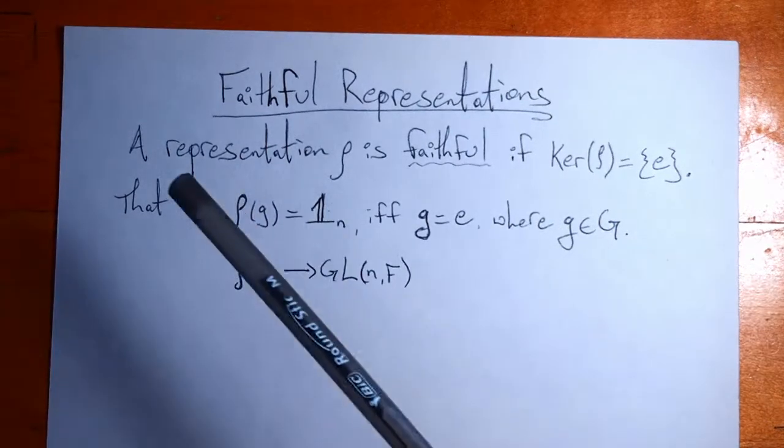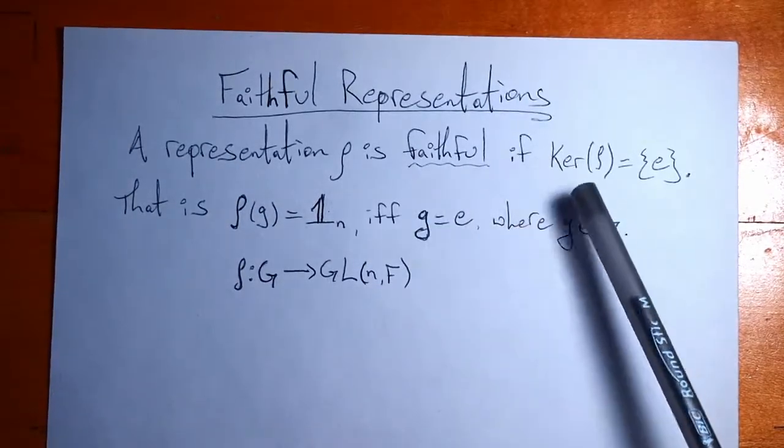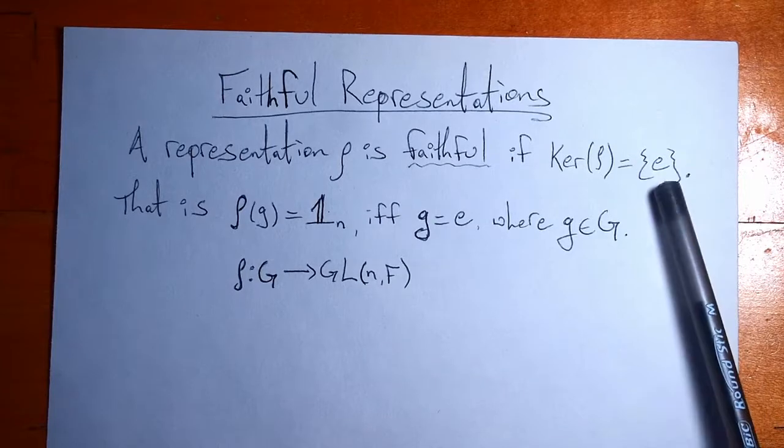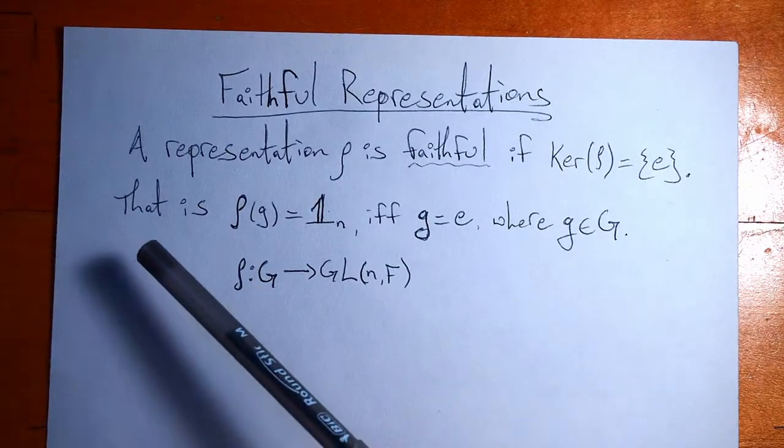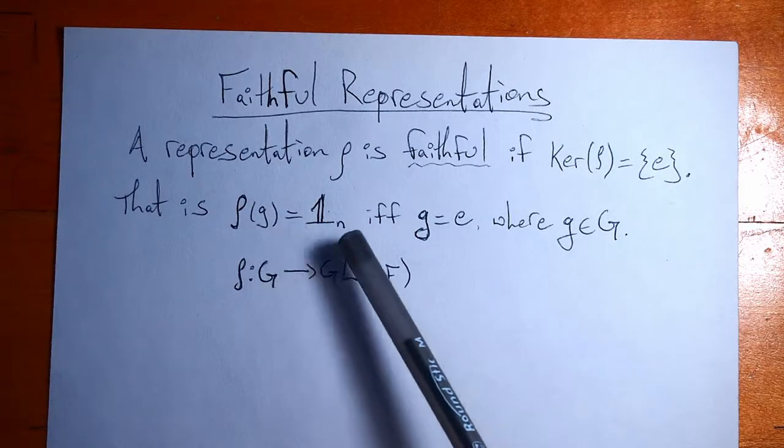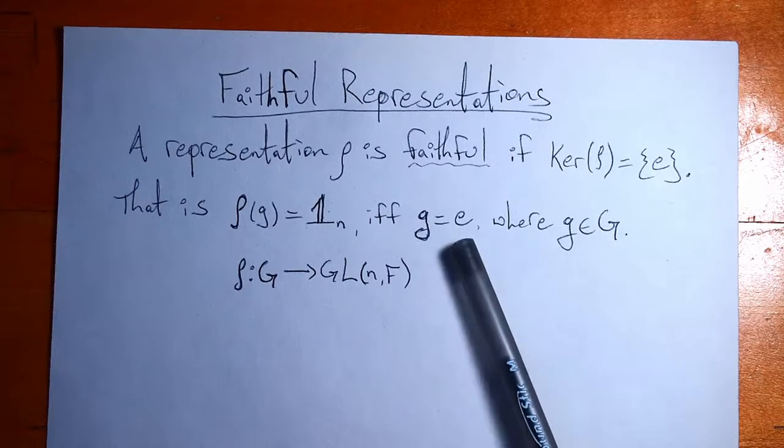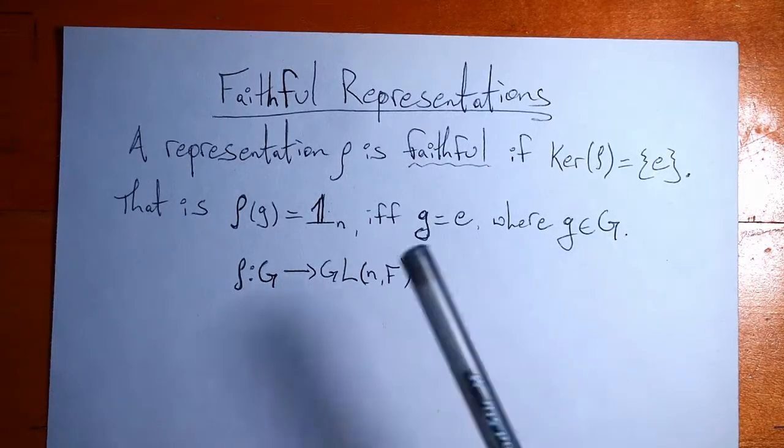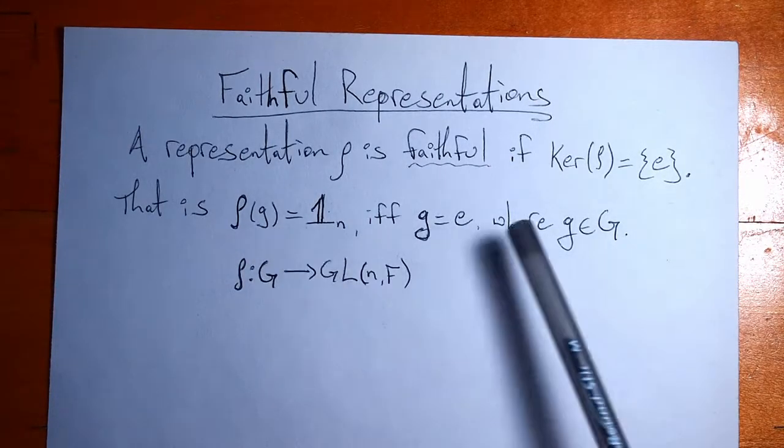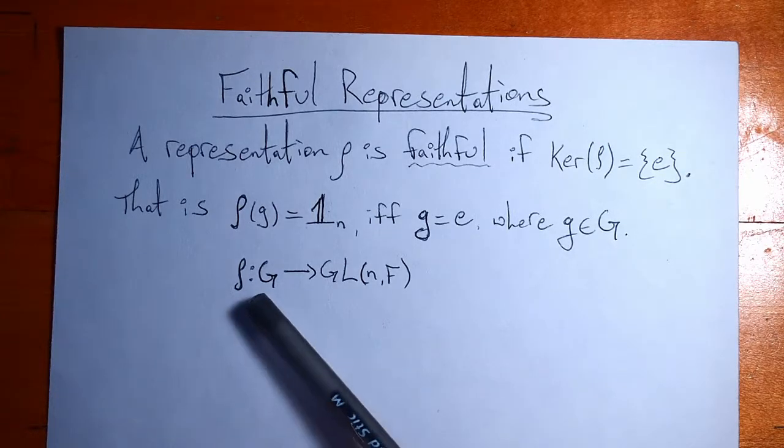Starting with the definition we have that a representation rho is faithful if the kernel of rho is simply the identity. Another way to say that is that if rho maps one of our group elements to the identity matrix, that group element better be the identity from that group. This has to be true for all g in our group. And of course rho is a representation so it's mapping from G to GL(n,F).